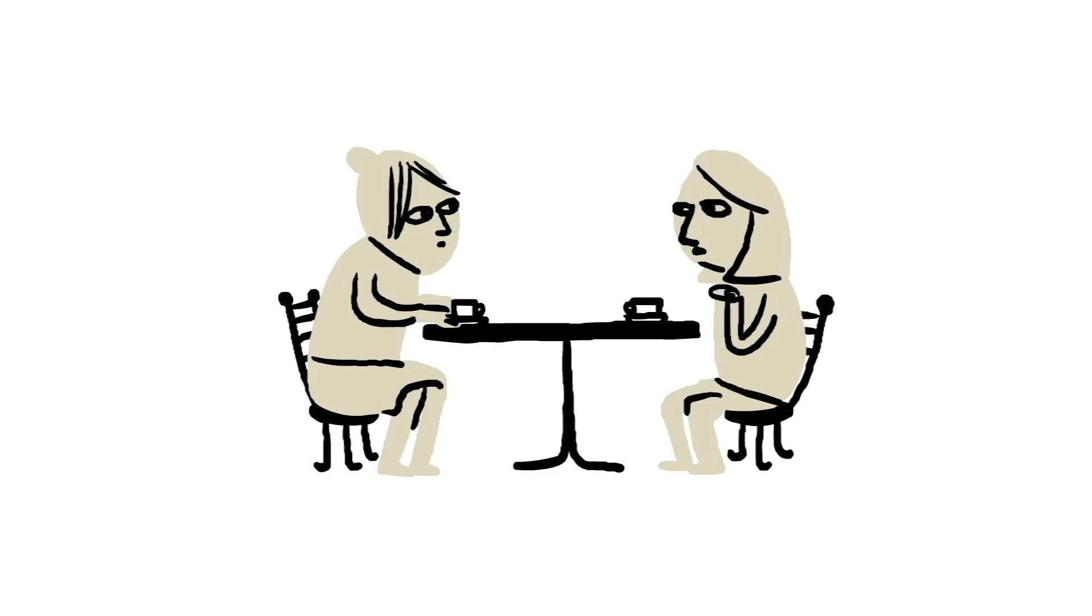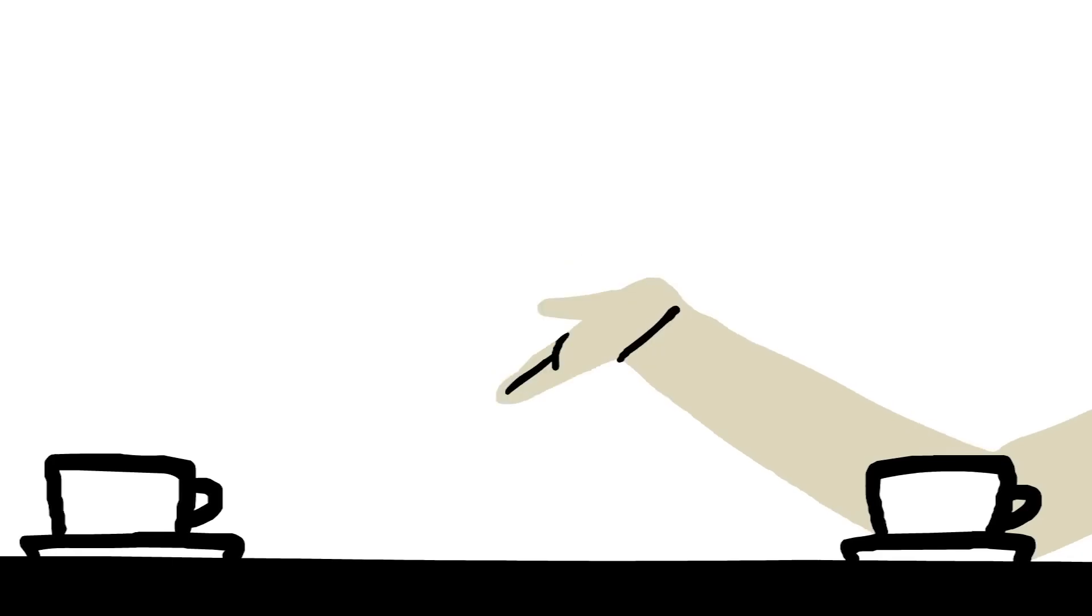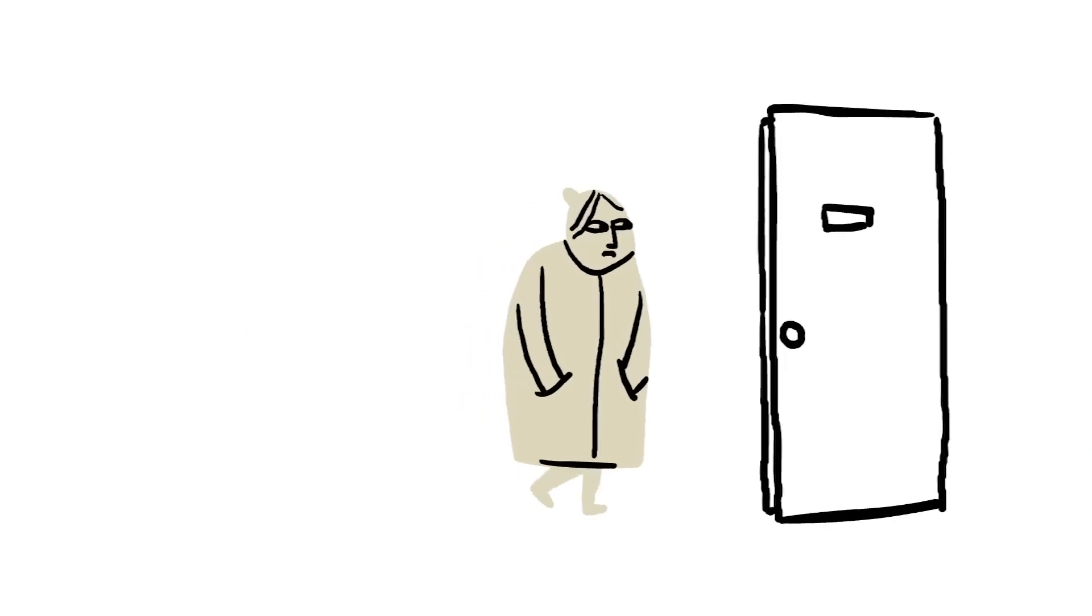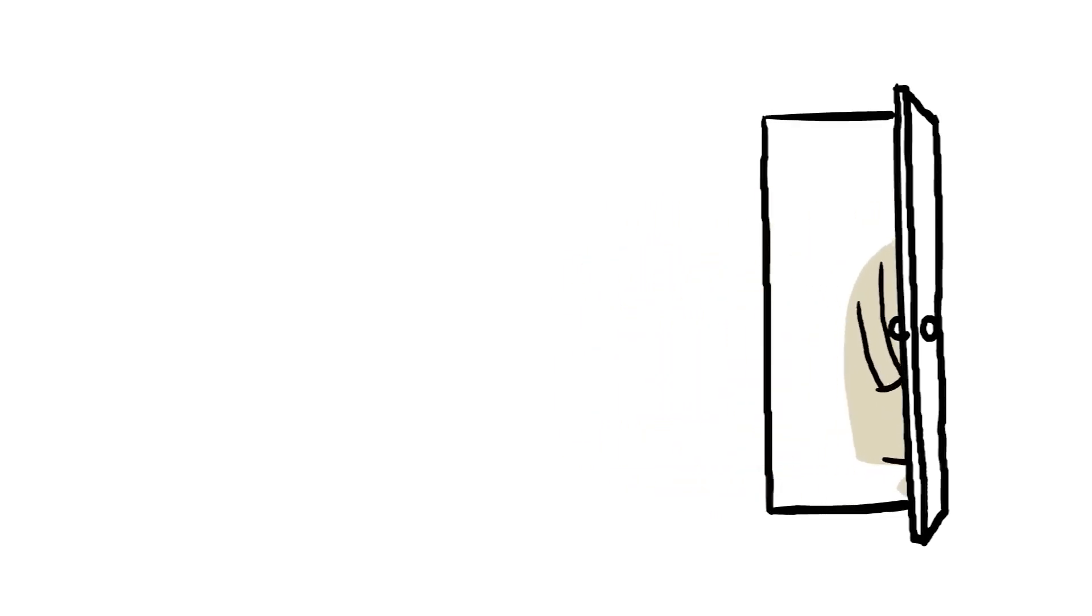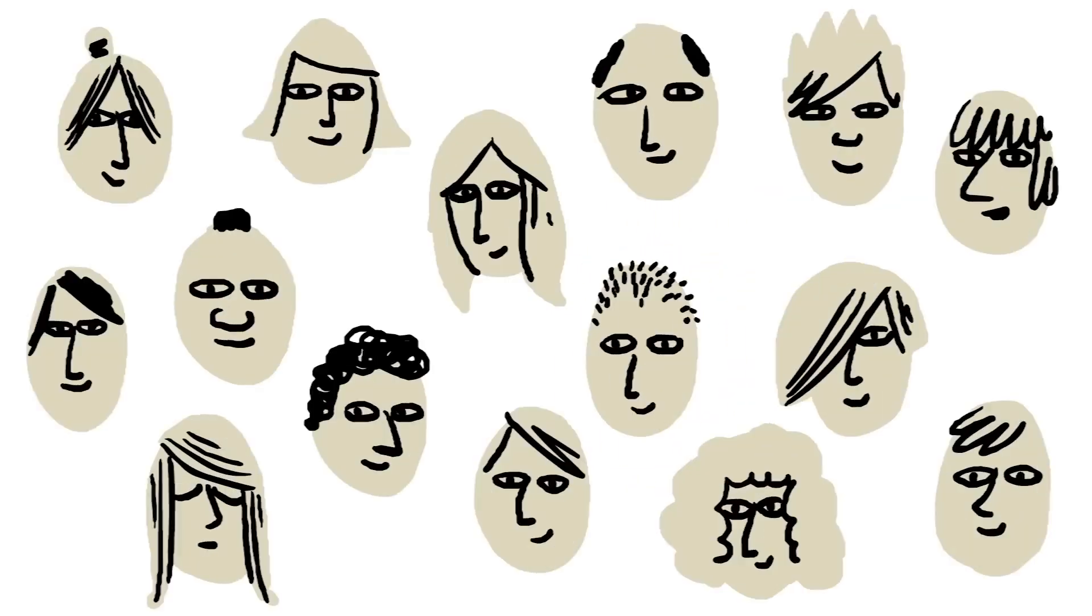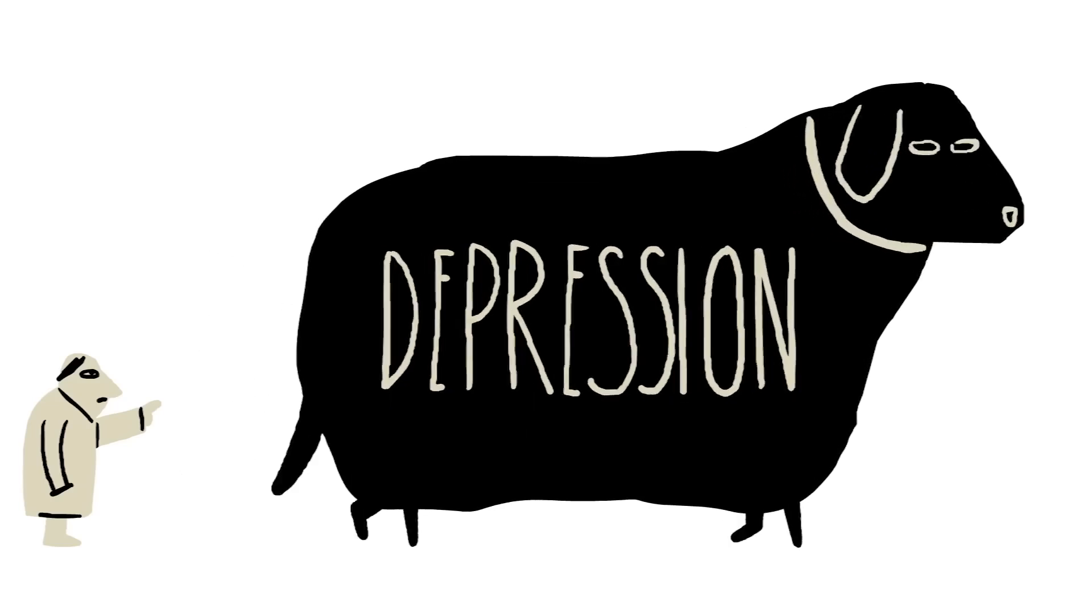Even just talking about depression openly can help. For example, research shows that asking someone about suicidal thoughts actually reduces their suicide risk. Open conversations about mental illness help erode stigma and make it easier for people to ask for help. And the more patients seek treatment, the more scientists will learn about depression, and the better the treatments will get.